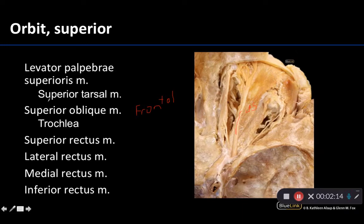We do have on your list of structures the superior tarsal muscle. This is generally something we probably should have kept more with the learning objectives because you can't really tell the difference between fibers of the superior tarsal muscles and fibers of the levator palpebrae superioris. These are going to be muscles that are under the control of autonomics, so if you think about blinking when you're not thinking about it, the superior tarsal muscle is really playing a role there.